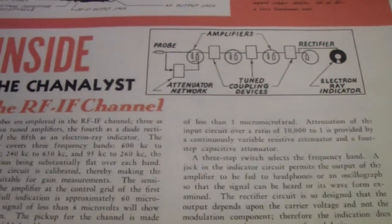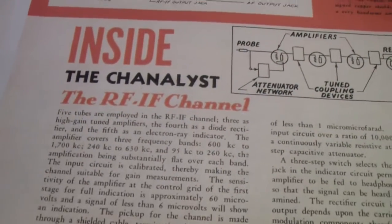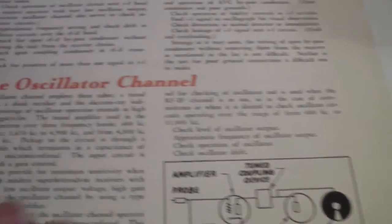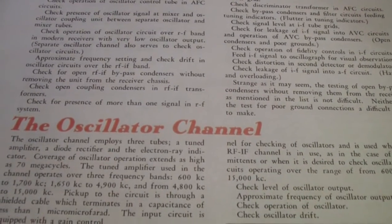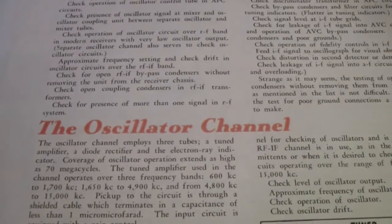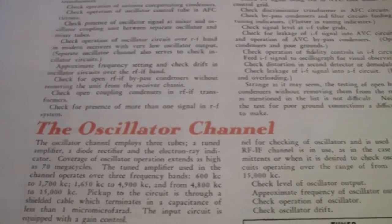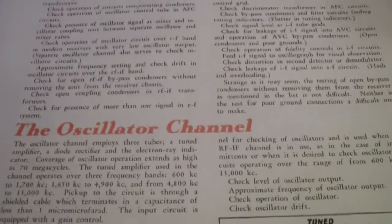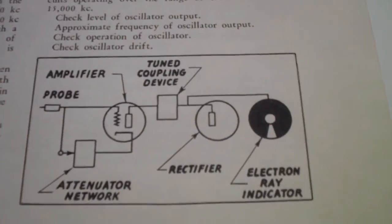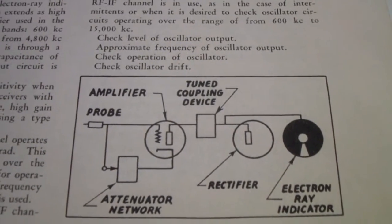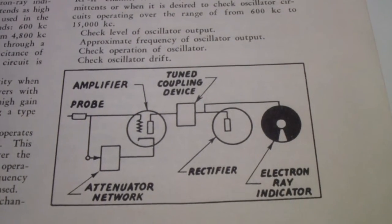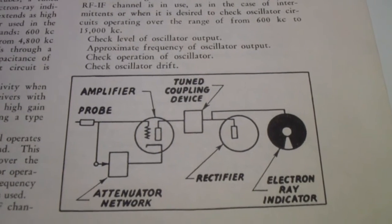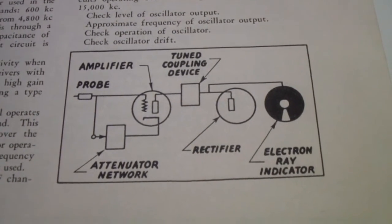That is the RF-IF channel. In other words, that's how you monitor everything from the RF through the IF. The next channel is called the oscillator channel, and this is the way you could determine whether the oscillator was running, and if it was, whether it was tracking across the entire band. That is, you could tune the Channelist to the oscillator, and then as you adjusted the oscillator, you could retune the Channelist to show that the oscillator was in fact following the circuit. Once again, an attenuator network off of a probe into an amplifier. Notice that there are fewer amplifiers. There's only one stage of amplification because the oscillator is a much stronger signal. Then it's rectified and applied to a tuning or a CNI tube.